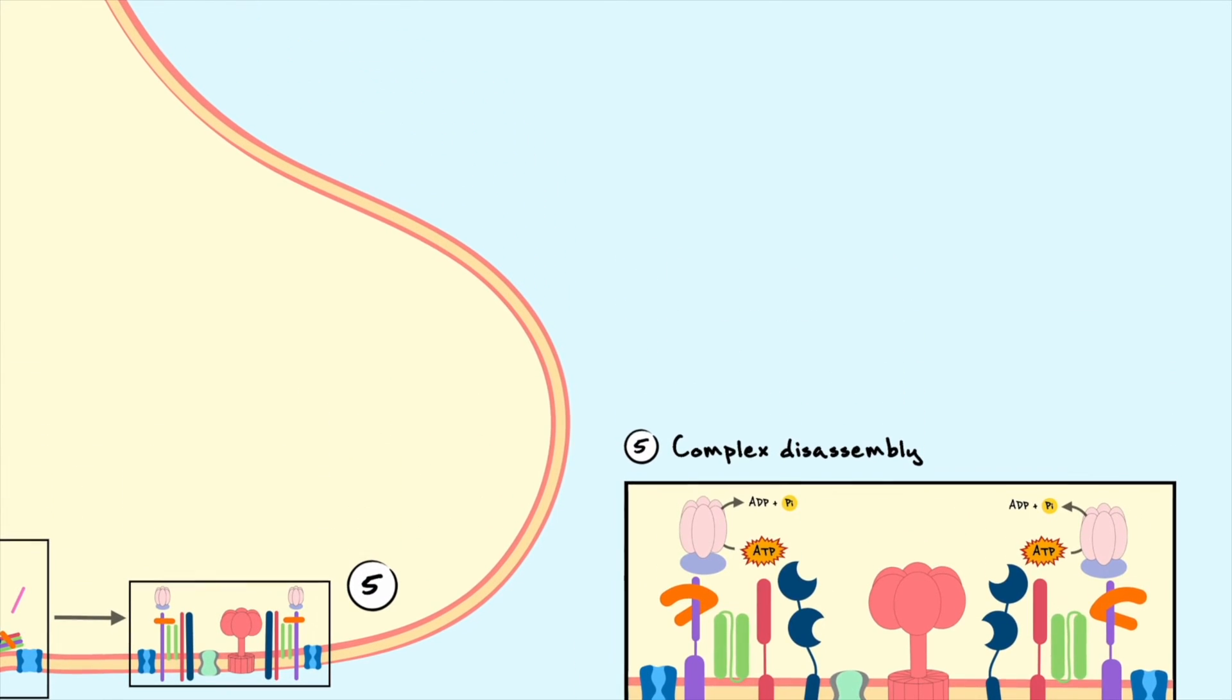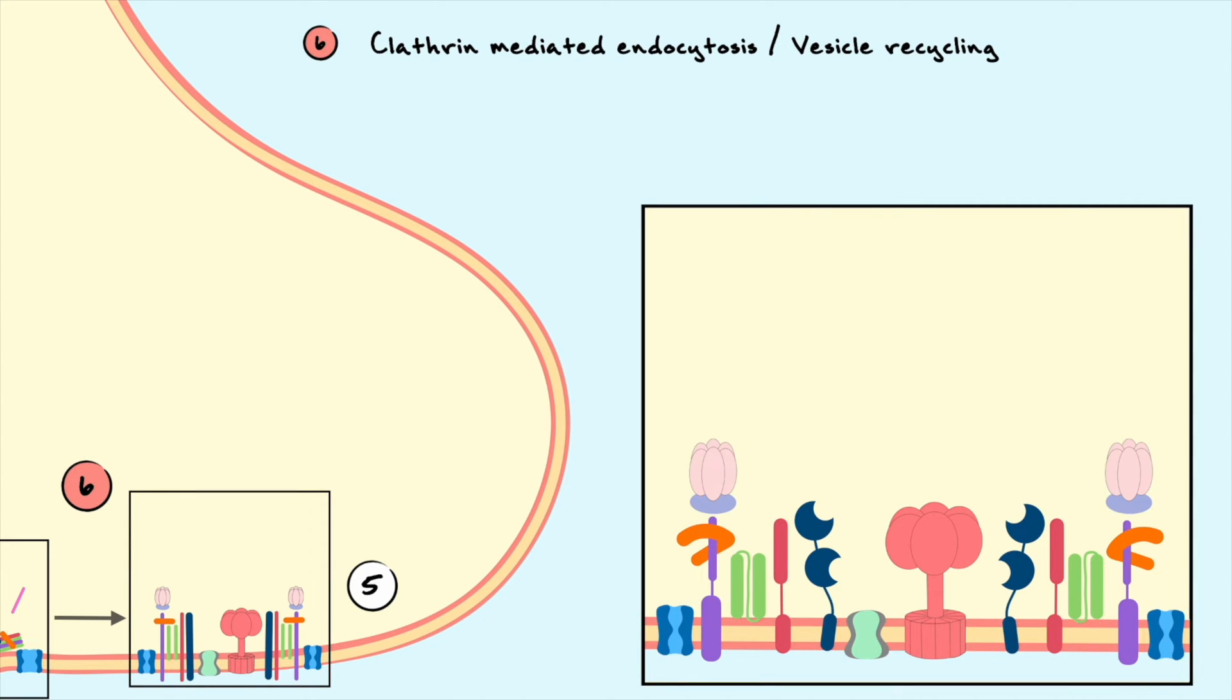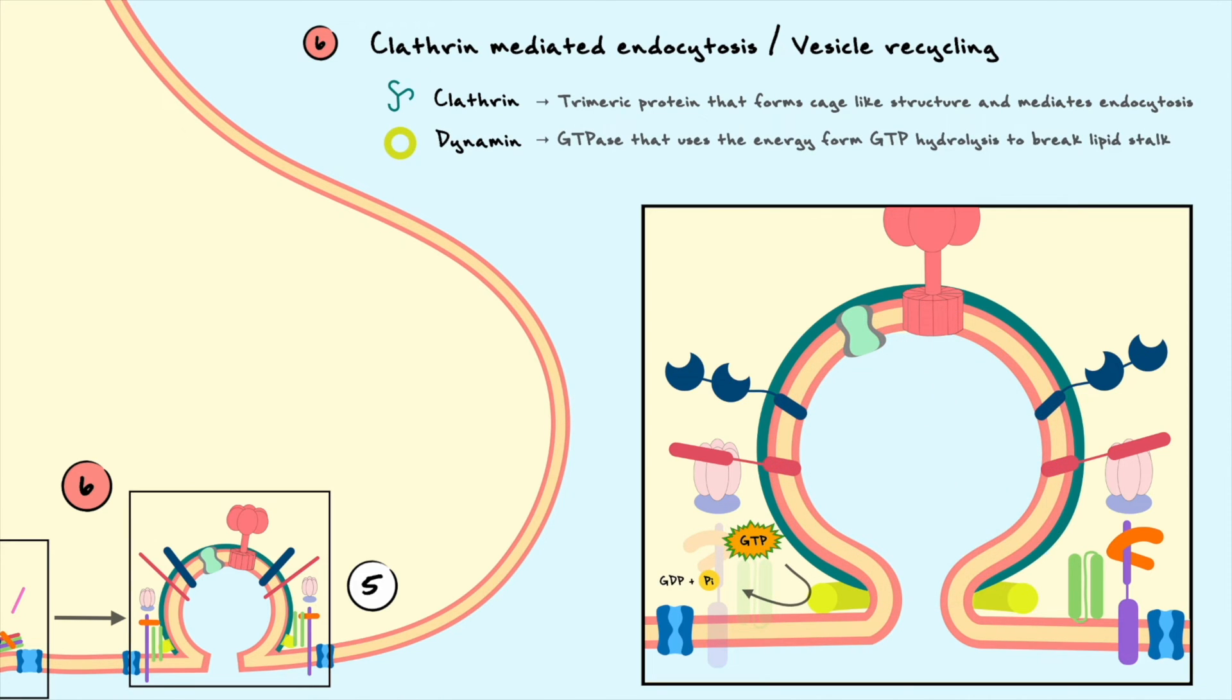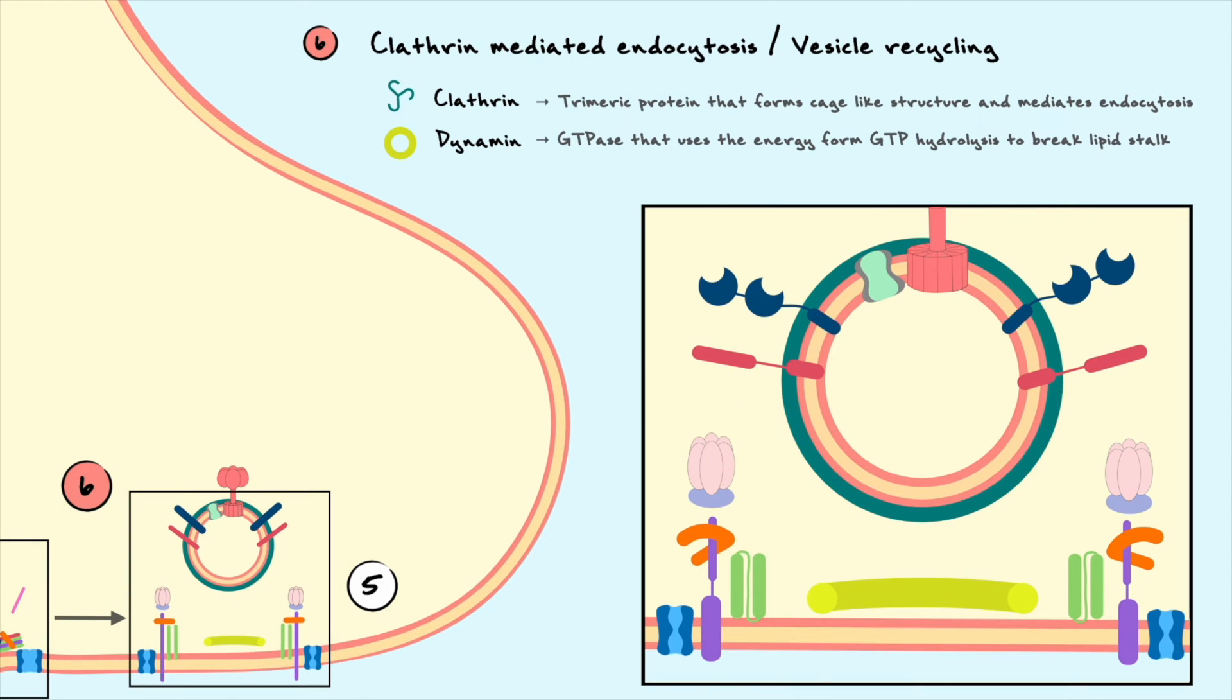One common route for vesicle recycling is clathrin-mediated endocytosis. Clathrin is a trimeric protein that binds to the membrane through adapter proteins and assembles into a cage-like structure. This cage-like structure dramatically changes the curvature of the membrane and forms the foundations for a new vesicle that is still associated with the membrane. A protein by the name of dynamin is a GTPase and uses the energy from GTP hydrolysis to pinch off the membrane by forming a ring around the lipid stalk. This subsequently frees the clathrin coat vesicle. The clathrin coat can then be removed by other proteins such as HSC70 and auxilin.